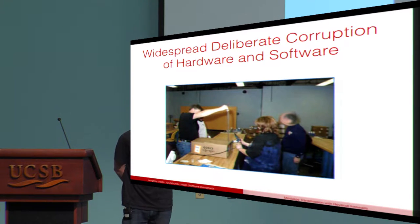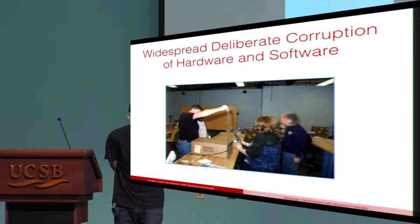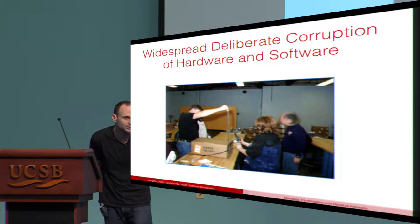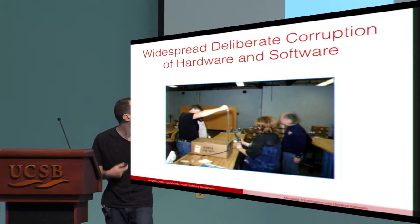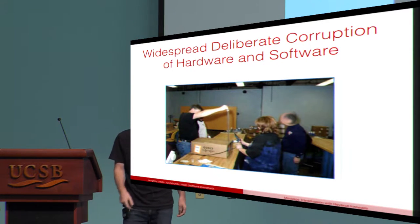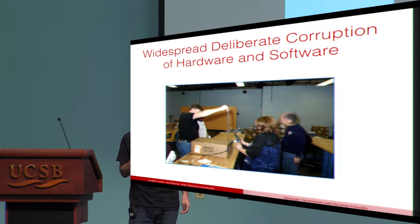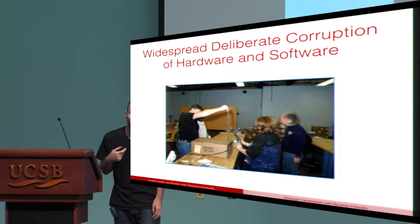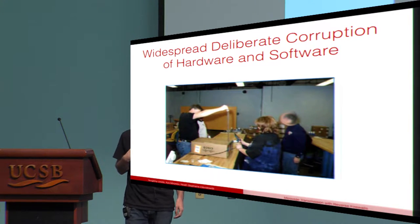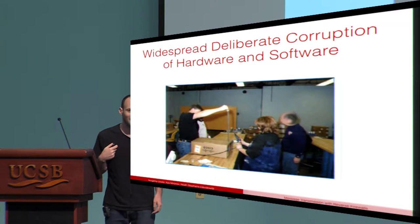Another way crypto gets broken is through deliberate corruption of hardware and software. Most of you have seen this picture: U.S. government agents actually intercepting hardware on its way to a customer in order to tamper with it and compromise their security.